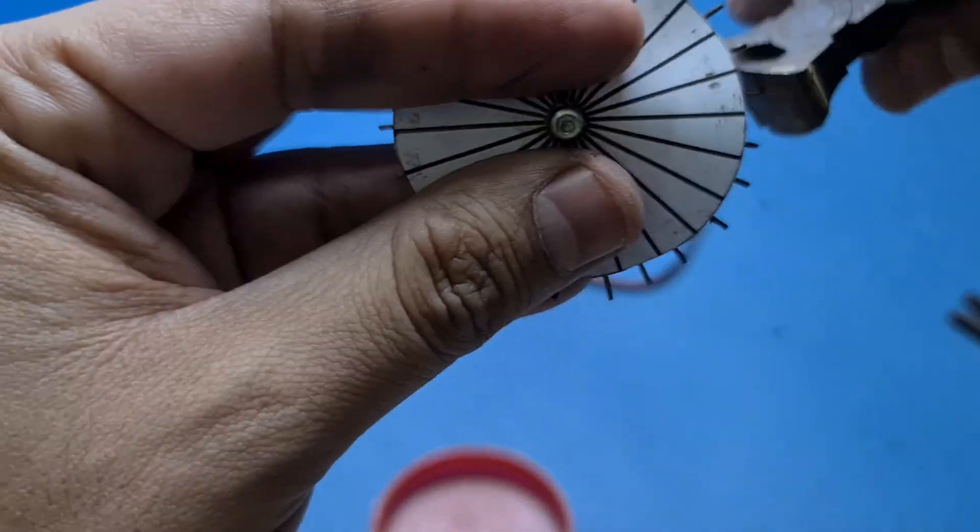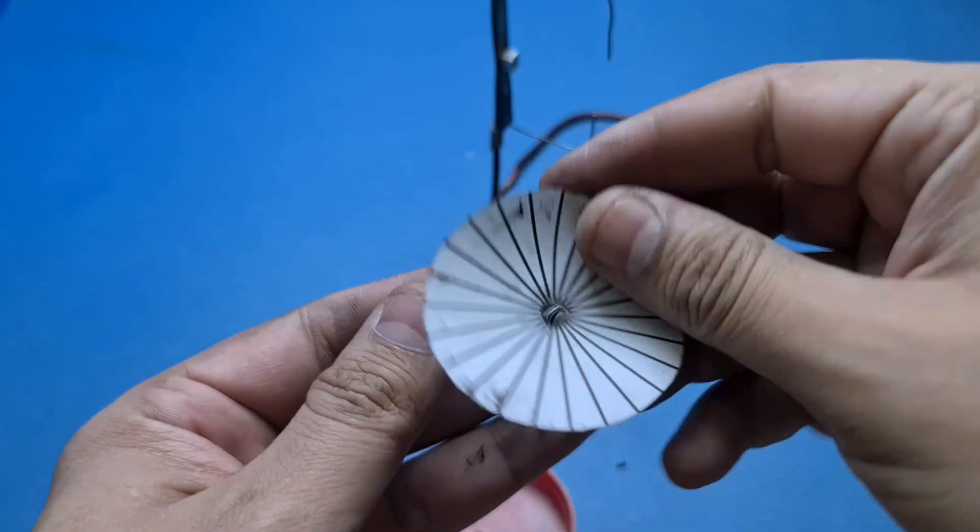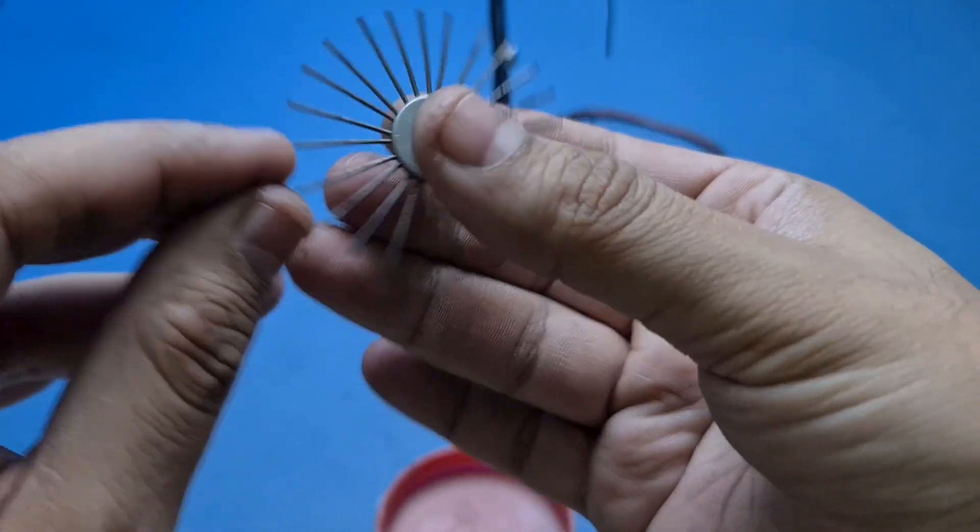We also need to make sure that all the wires on this wheel are equal in length and distance from one another.